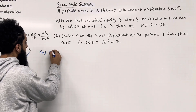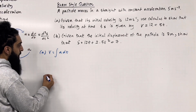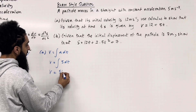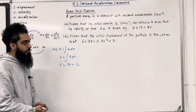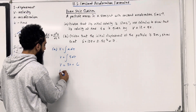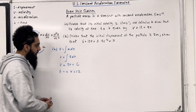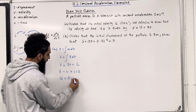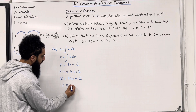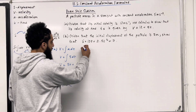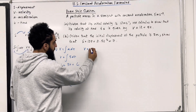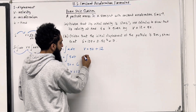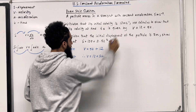In part A, to find the velocity, we have to integrate the acceleration with respect to time. So the velocity is given by the integral of 5 dt. So V is equal to 5t plus c, the constant of integration. Now the initial velocity is 12 meters per second, so we know that when t = 0, V = 12. Substituting the boundary conditions: 12 = 5 × 0 + c, so c = 12. Therefore, V = 12 + 5t, as required.